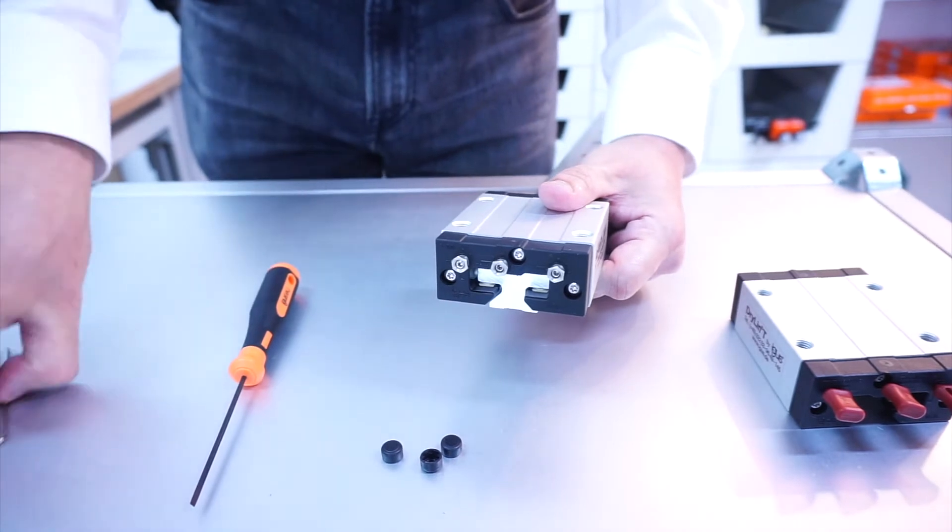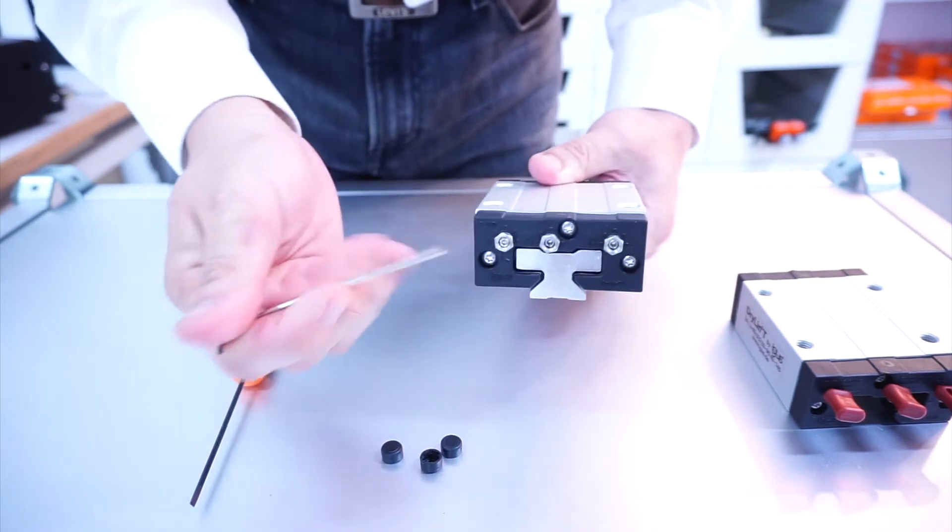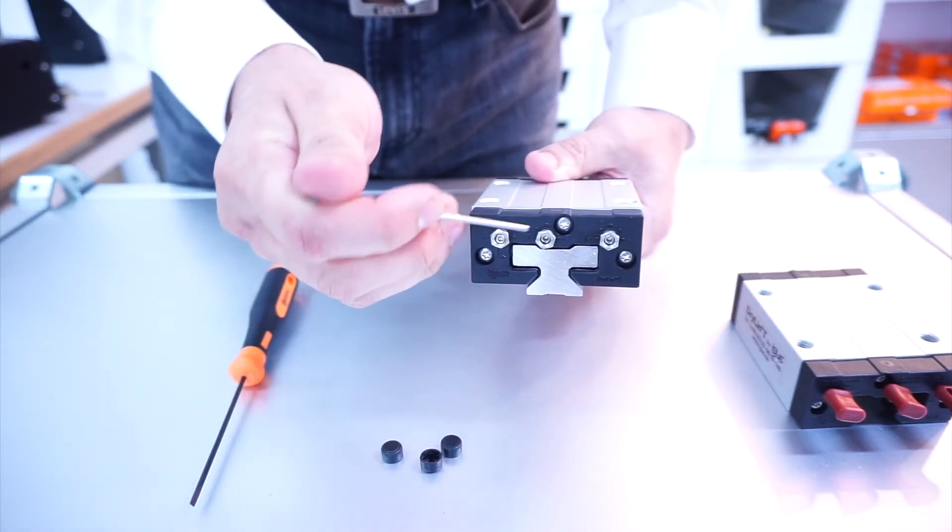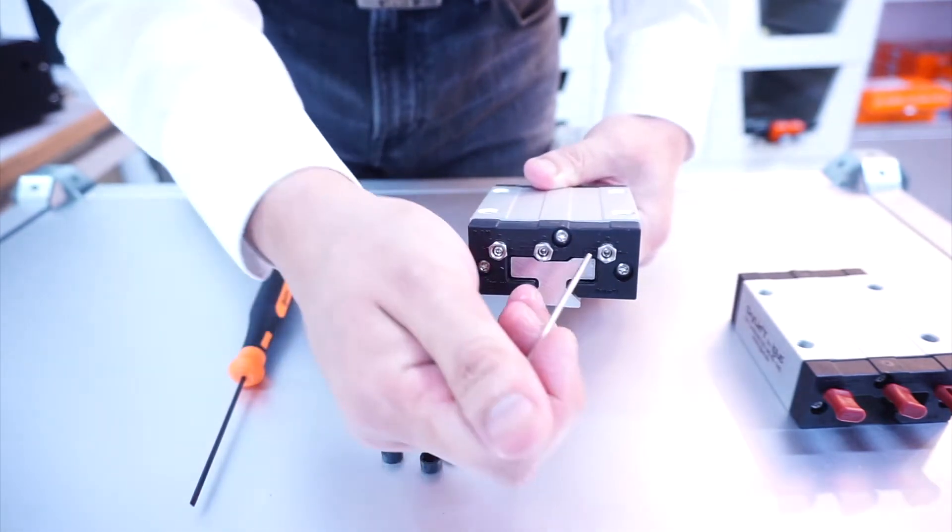Once it's loosened, take your Allen key. Down here in the display, it will tell you where you are actually adjusting the pre-load, either the top, the left or the right.